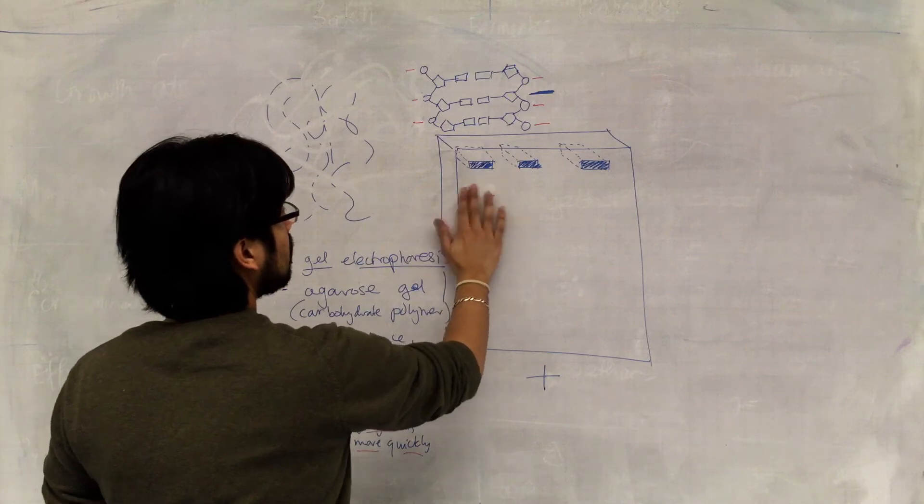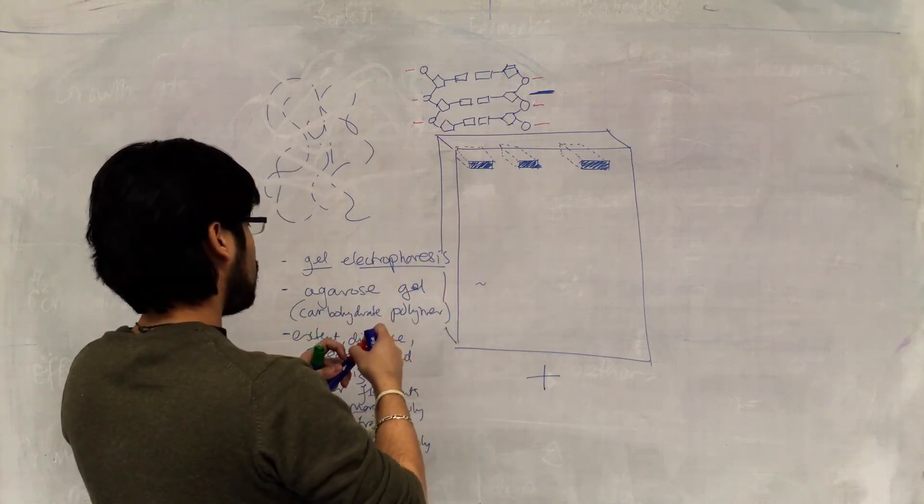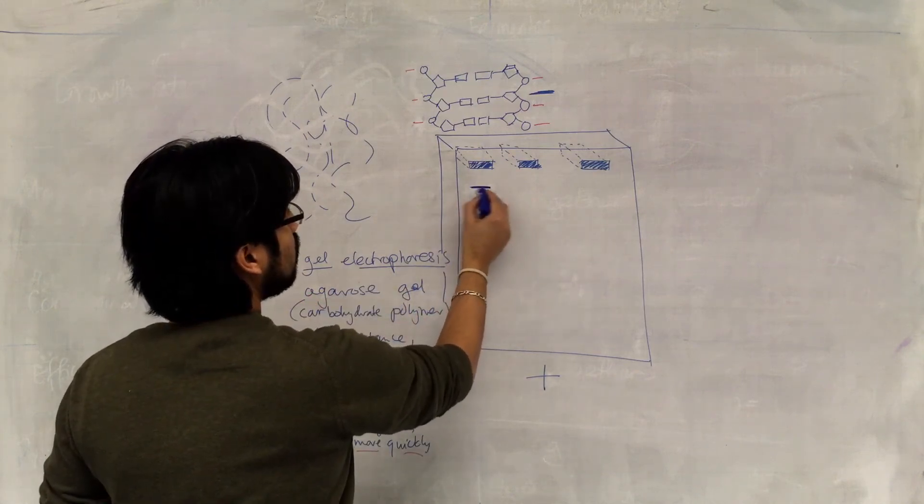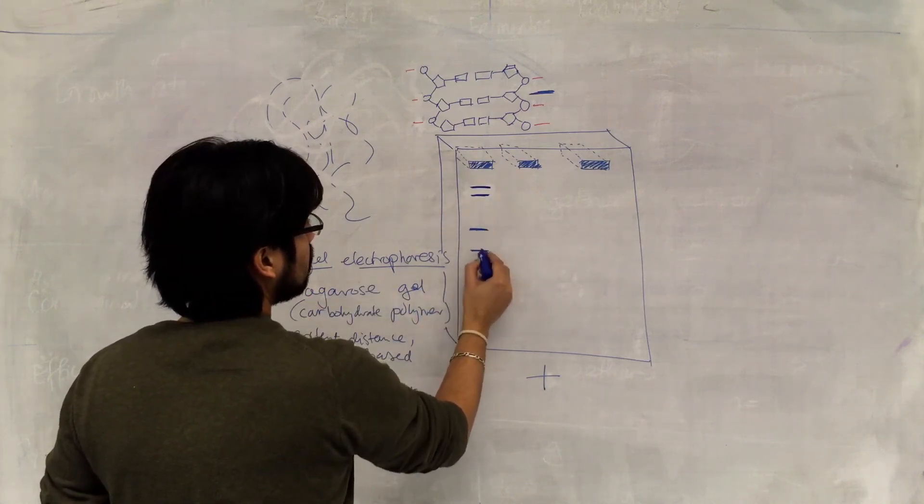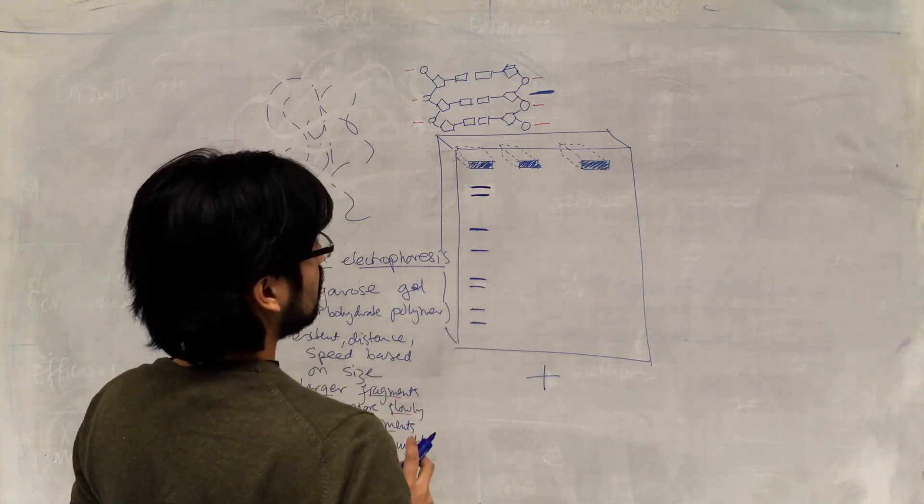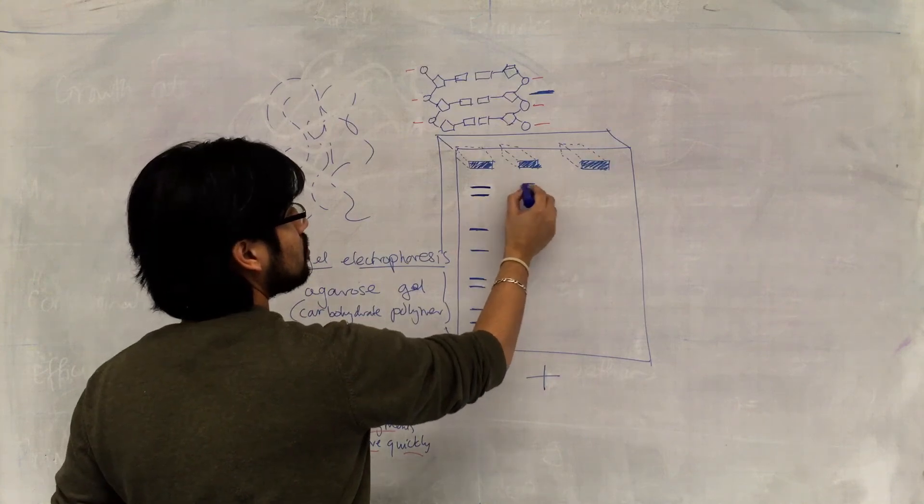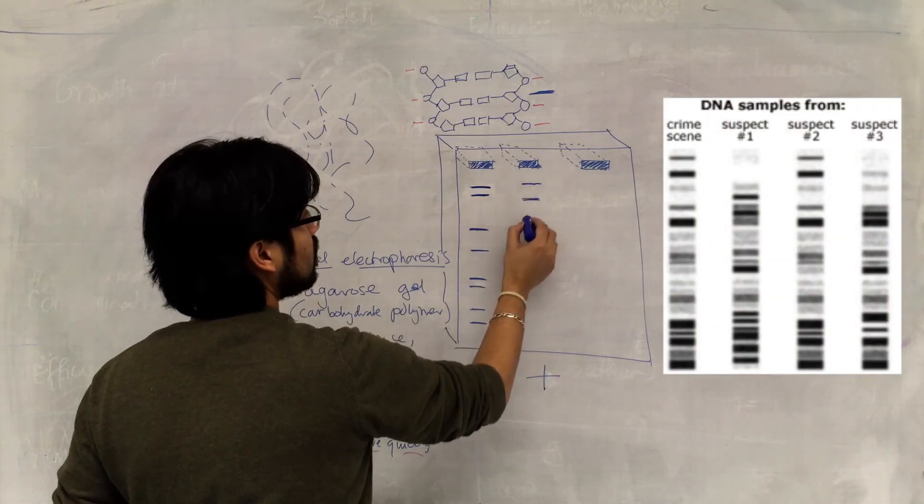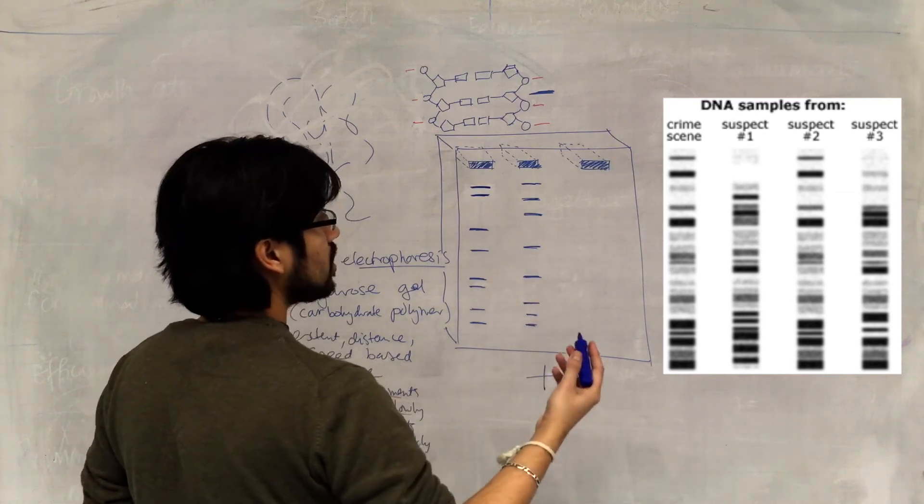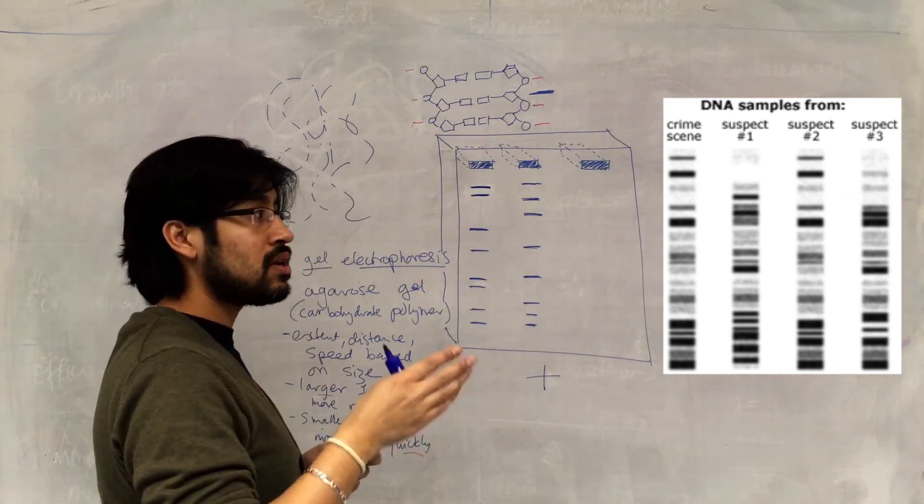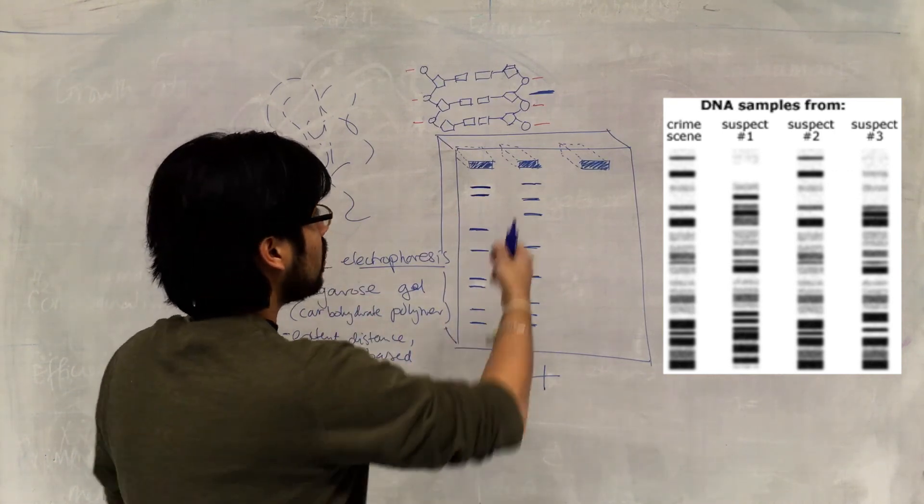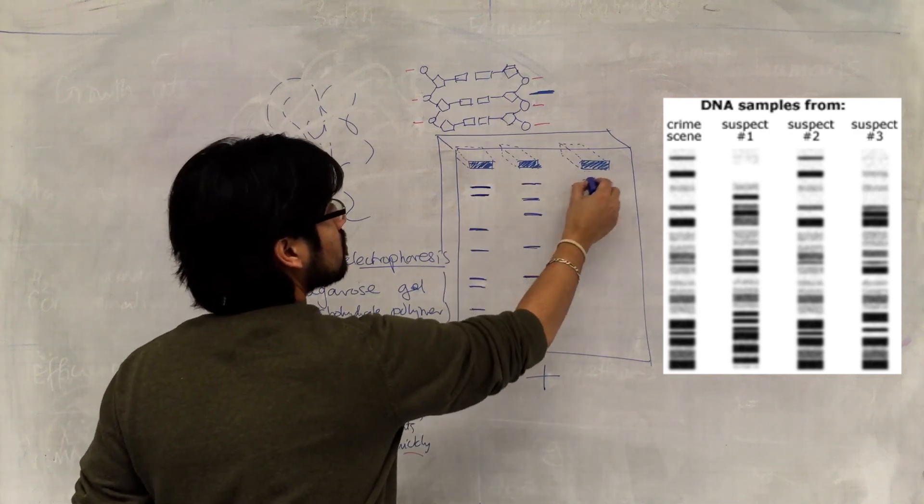Whereas smaller fragments will move more quickly and travel further in the gel. And after a set amount of time, if we can visualize the DNA, we'll get large fragments here and going down here we'll have smaller fragments and so on. And if we have different DNA samples, we'll likely get a different profile because restriction endonucleases only cut at specific sequences. And because different samples of DNA will have different sequences, we will possibly get different sized fragments.